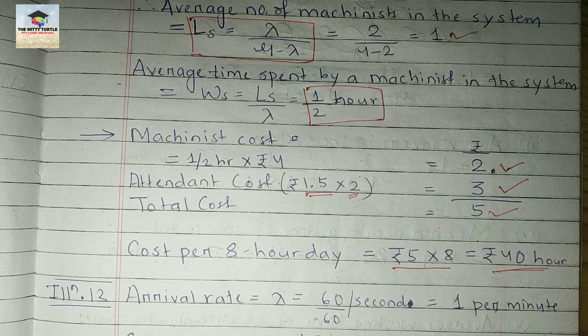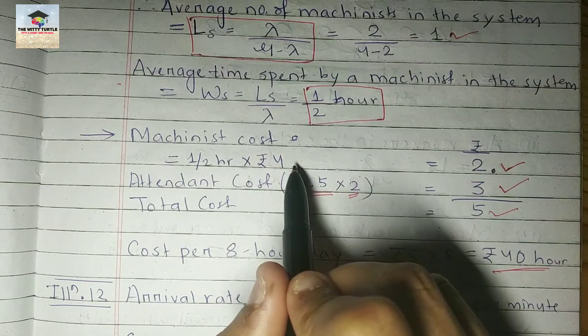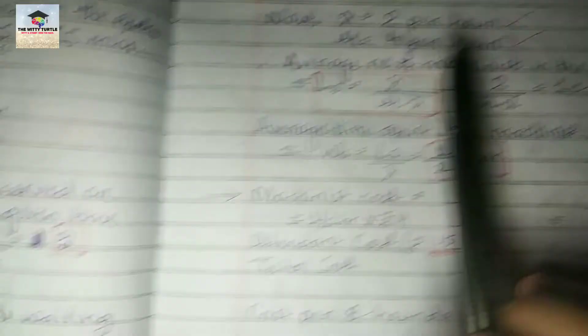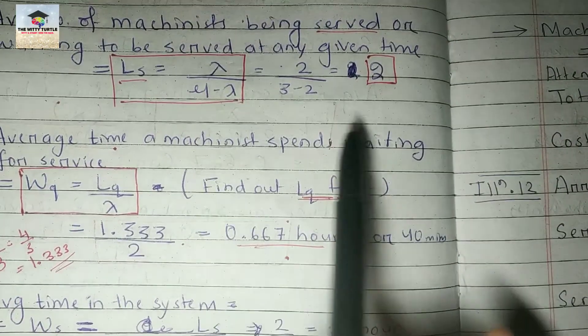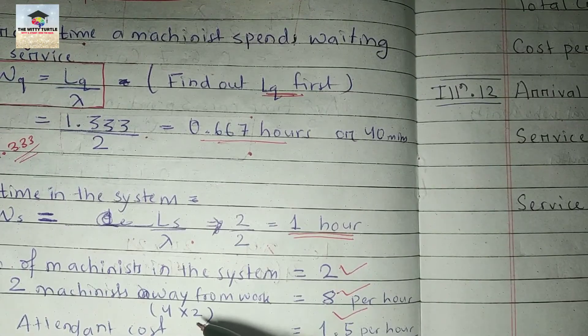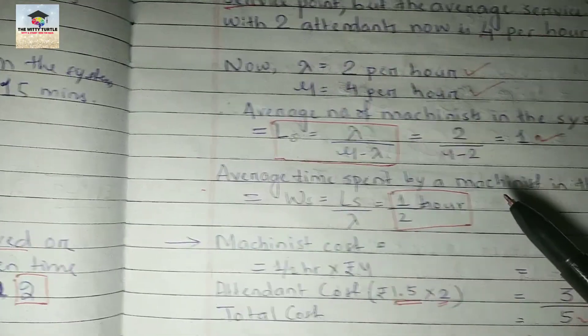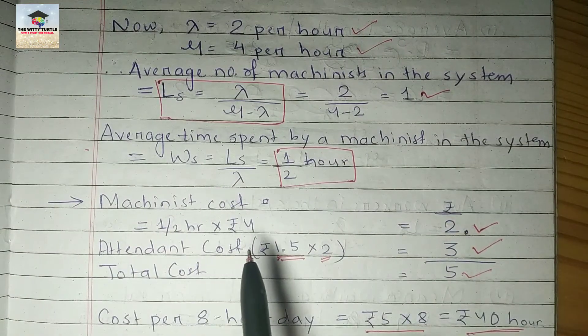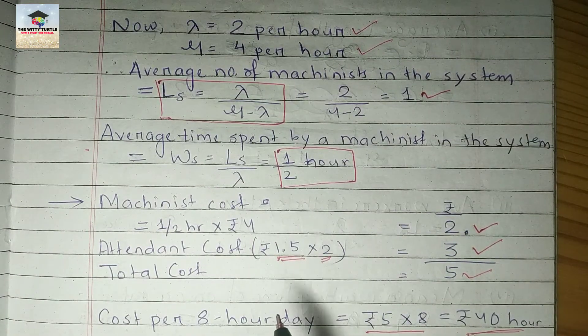In case you got confused about why here only one machinist is there, see we have already calculated this here. Previously we calculated it came as 2, that's why we multiplied 2 here. But here it is coming as 1, so obviously we will calculate the machinist cost for only one machinist.